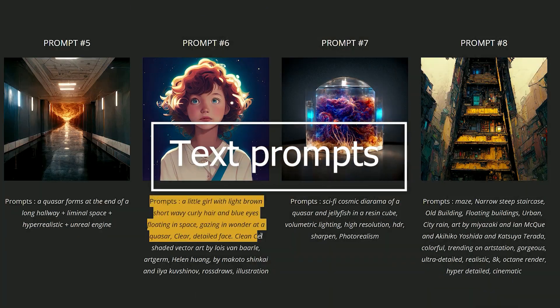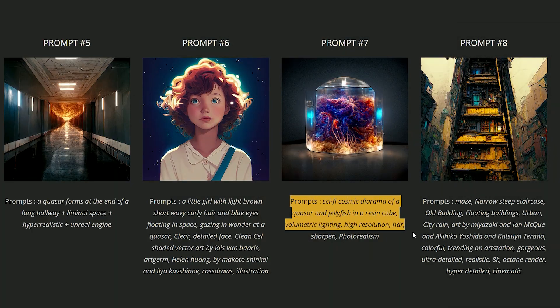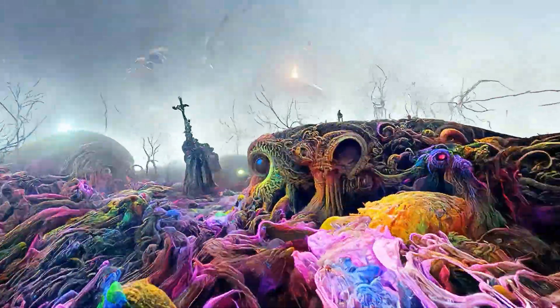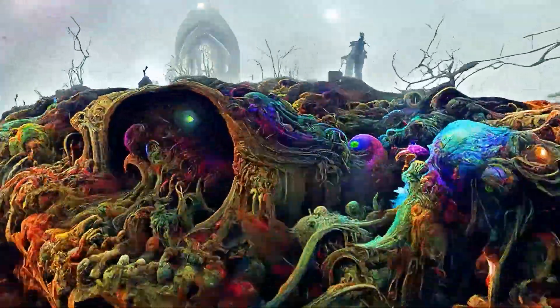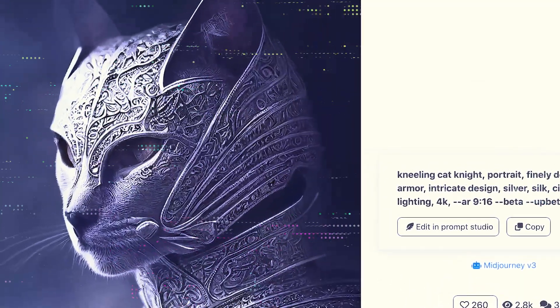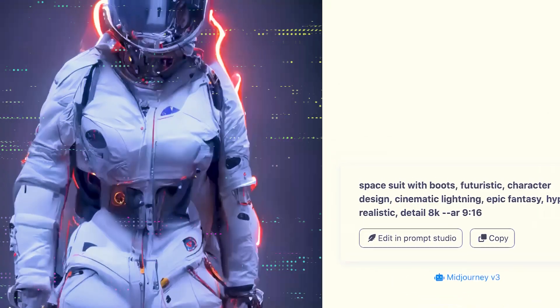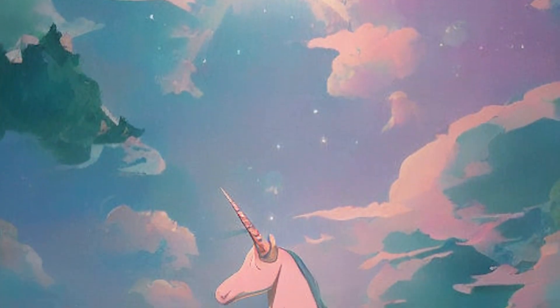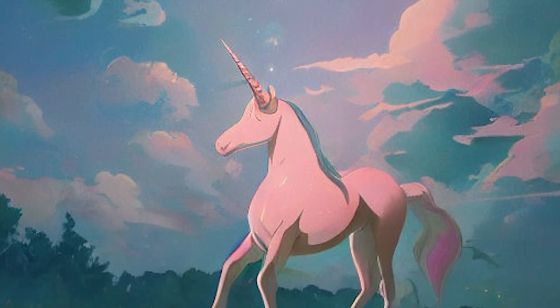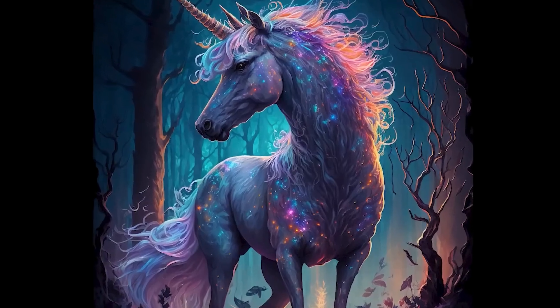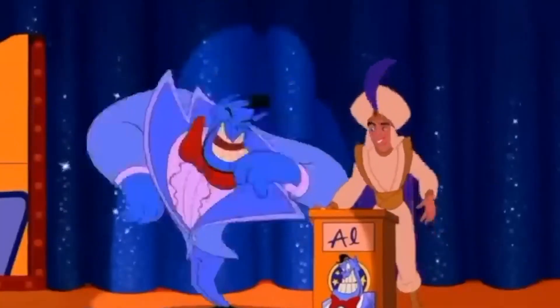Text prompts are the most common and straightforward type of prompt on MidJourney, and they're a great way to bring your image ideas to life. All you have to do is describe what you want to see, and MidJourney will work its AI magic to make that happen. Your text prompt can include all the adjectives, nouns, verbs, and other parts of speech your art desires. For example, want to see a majestic unicorn galloping through a field of wildflowers? Just type it out, and MidJourney will create an image that matches your description.